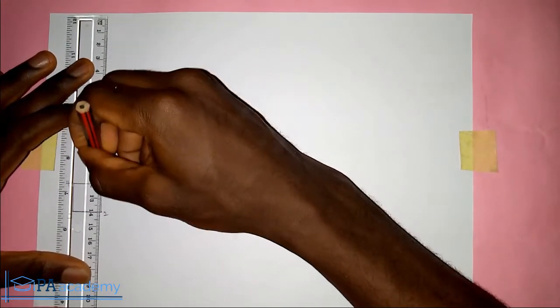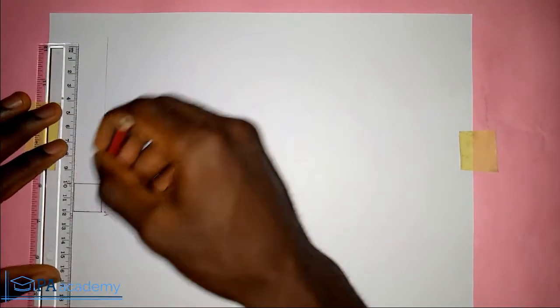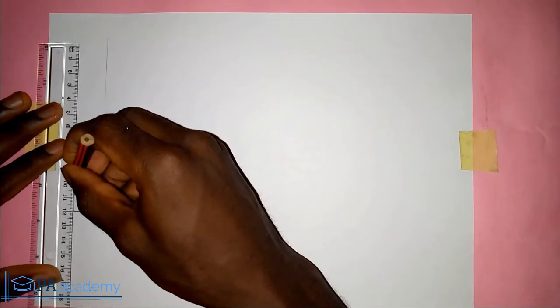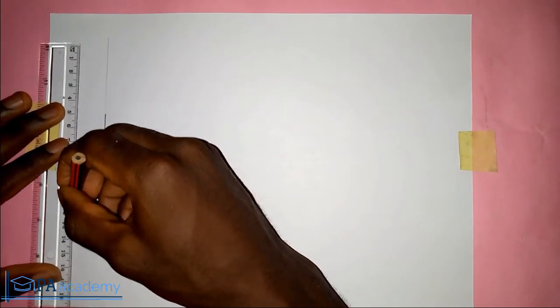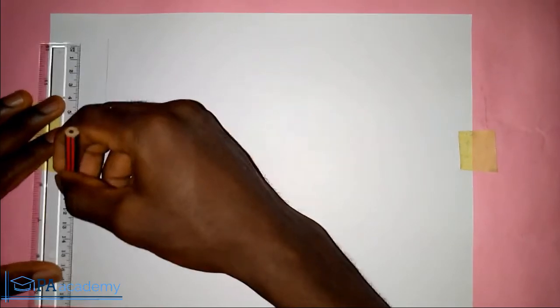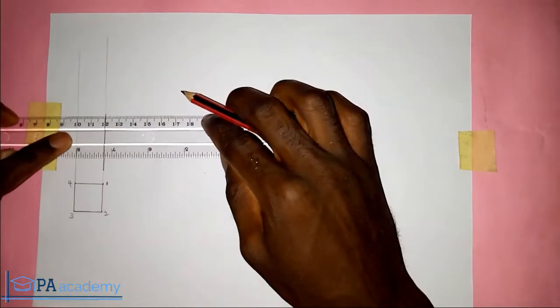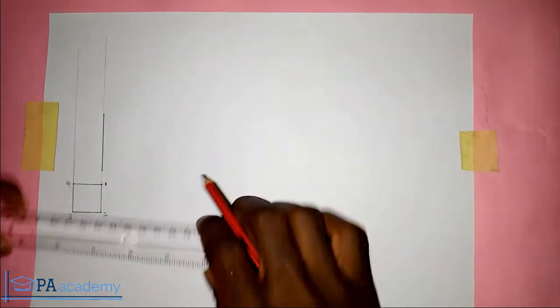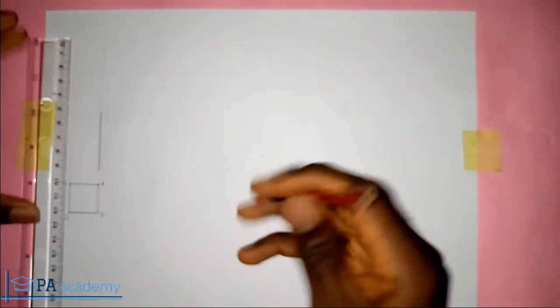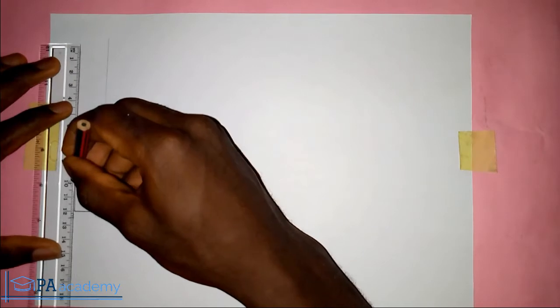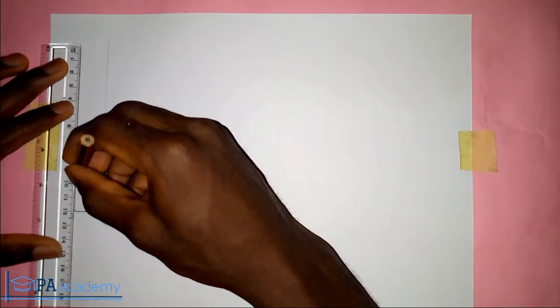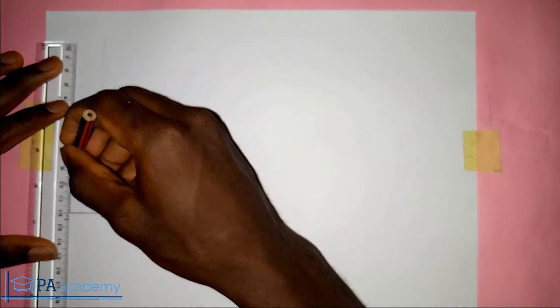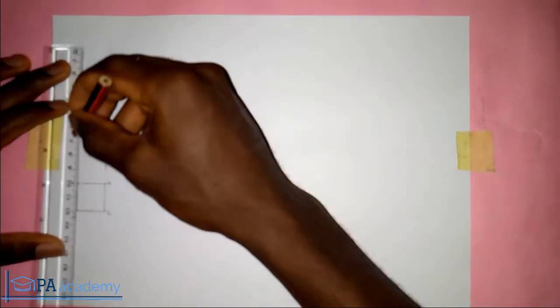So let me make it bold. I'll do the same to this side of the square. Let me just be sure, just trying to be sure that they are parallel. 1, 2, 3, 4.